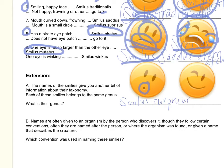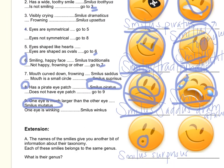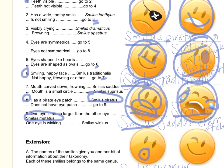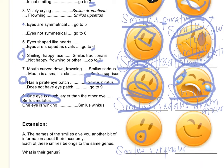And then we got this guy. Teeth visible? No — go to four. Eyes are symmetrical? No — eyes are not symmetrical. Go to eight. Has a pirate patch? No. Does not have a pirate patch — go to nine. One eye is winking — definitely one eye is winking. So he's Smilus winkus.